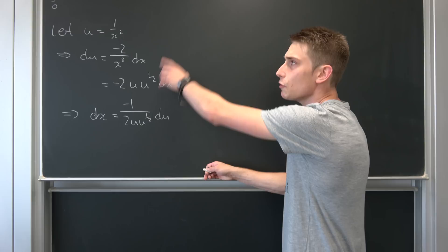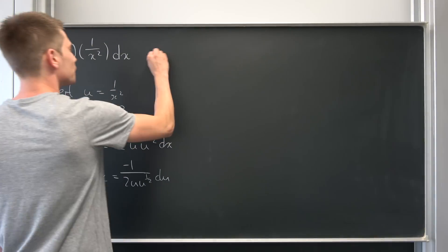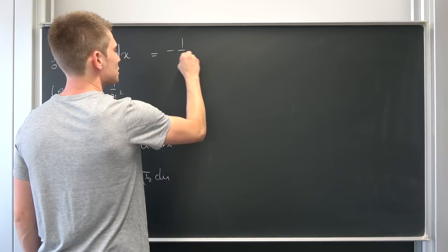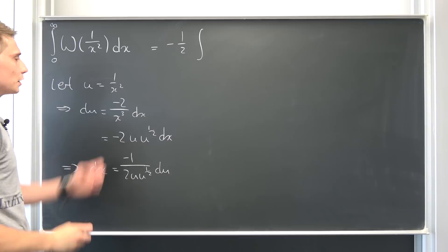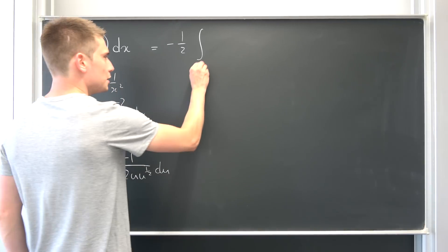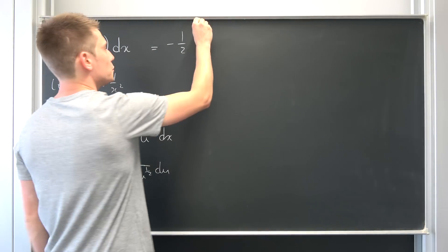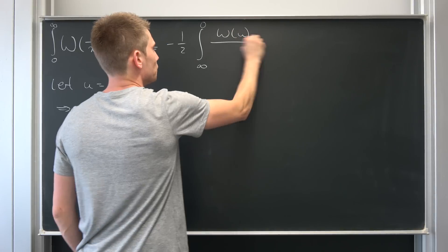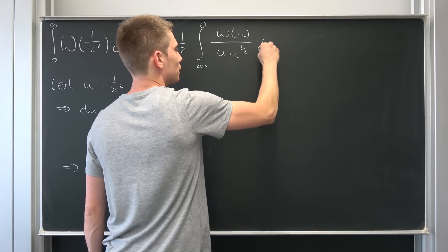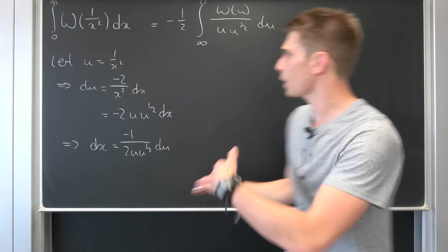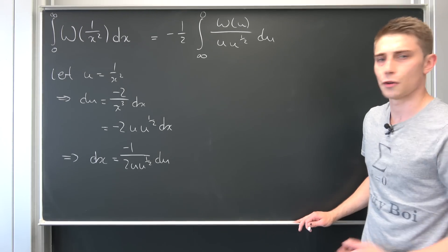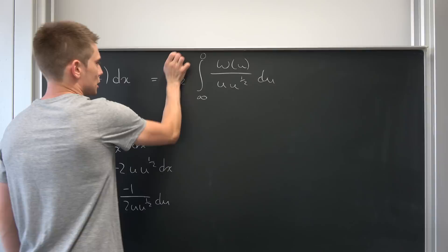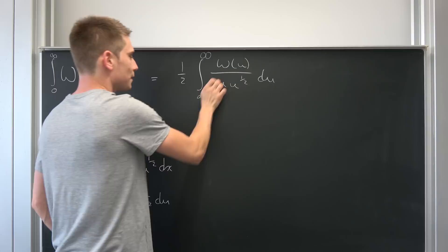Now we can plug all of this into our integral. We bring the negative 1/2 to the outside — it's just a constant. The integral runs from: well, if x approaches 0, u tends to infinity, and if x approaches infinity, u tends to 0. So we have Lambert W of u over u times u to the 1/2 power, integrated with respect to u. Distributing the negative sign into the integral, we just swap the upper and lower bounds: 0 to infinity.